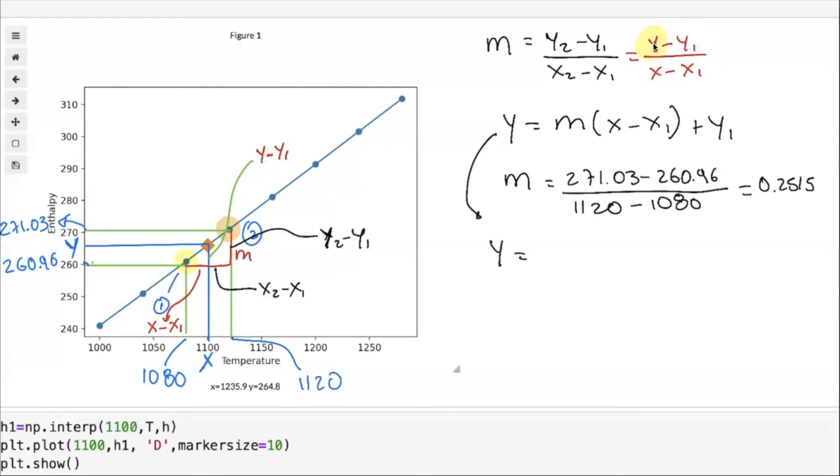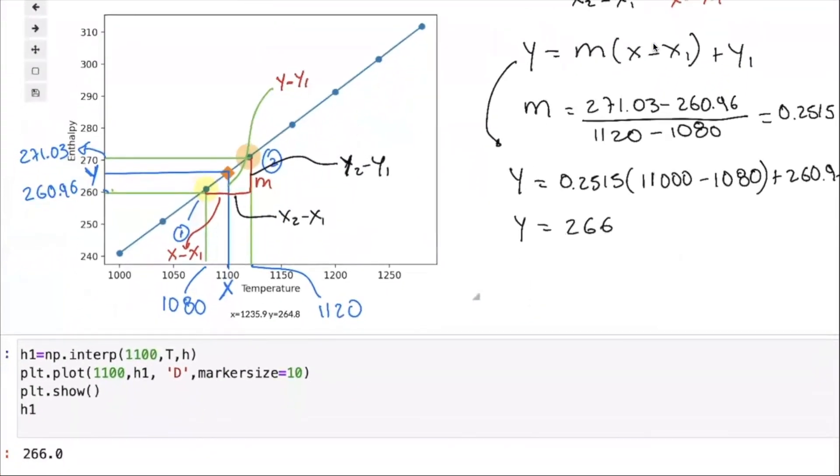Our equation is y equals the slope, in this case 0.2515, multiplied by x (and x is the value that we want to interpolate which is 1100) minus x1 (and x1 is 1080) plus y1 which is 260.96. When we compute that value we are going to have that y is equal to 266, which corresponds to the value that we found with the interp function in Python.